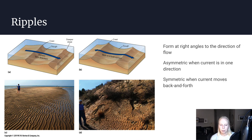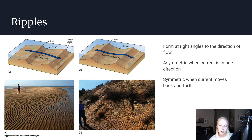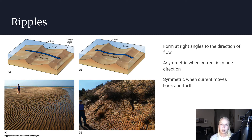Now let's talk about ripples. Ripples form in a similar scenario but are typically formed by water. They come in two different flavors: asymmetric ripples that have a shallow side and a steep side, or symmetric ripples in which both sides are roughly the same angle. When you have asymmetric ripples, that usually means the current is going in one direction for an extended period of time — similar to dunes, you can determine the flow direction. If the ripples are symmetric, the current is likely going back and forth.